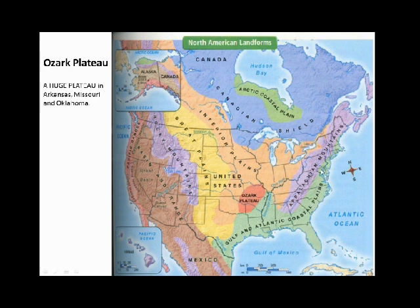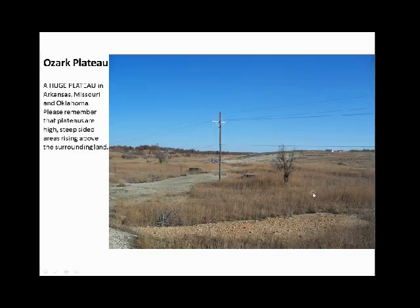The next landform we're going to discuss is the Atlantic Coastal Plain. It's east of the Appalachians — the land drops into the Atlantic Coastal Plain, which meets the Atlantic Ocean. This is where we live. It stretches all the way down to Texas — Texas, Louisiana, Mississippi, Alabama, Georgia, South Carolina, Florida, North Carolina, Virginia, Maryland, Delaware, New Jersey, New York, and even all the way up to Maine. So it goes down the east coast of the United States and across the Gulf of Mexico, which is the body of water right here.